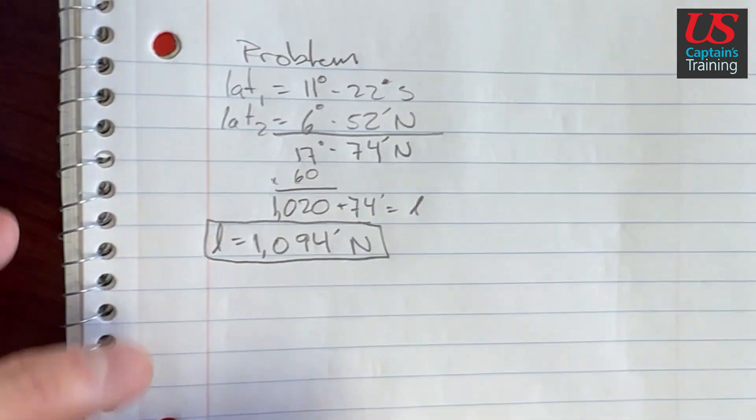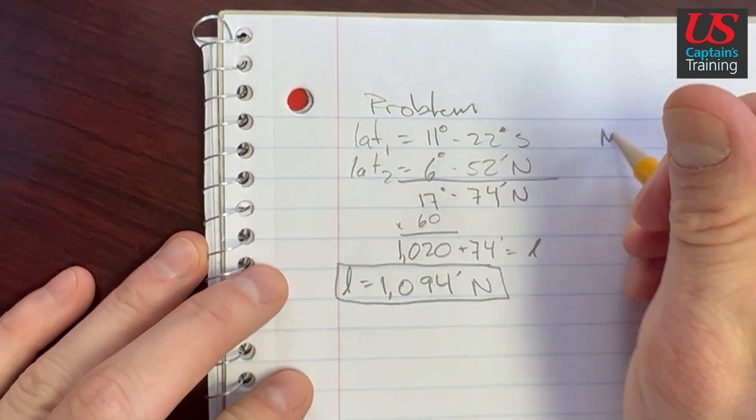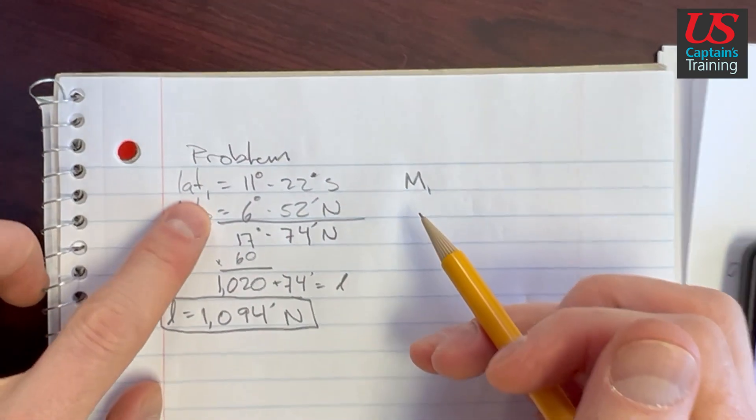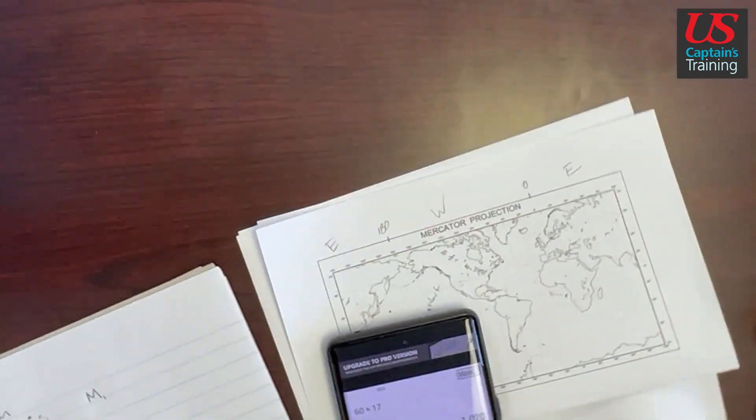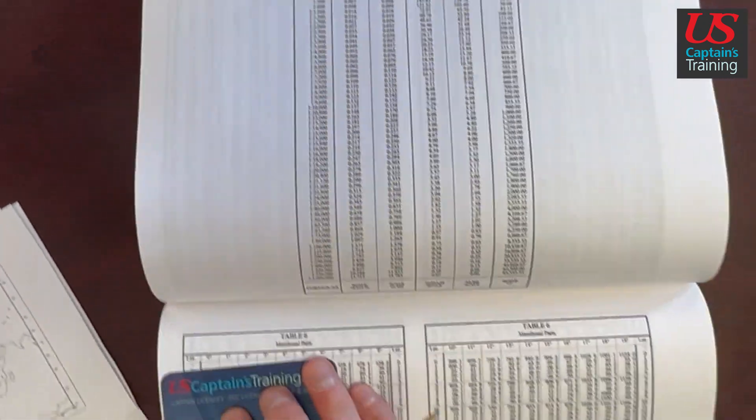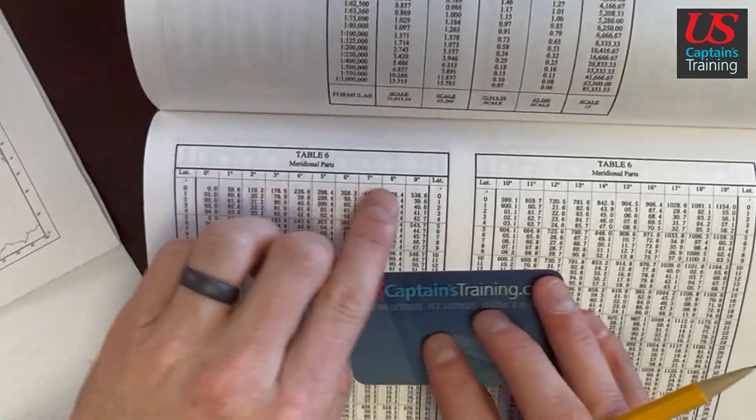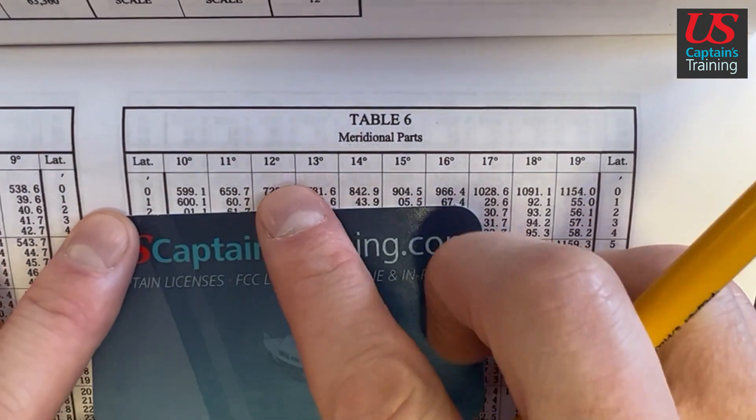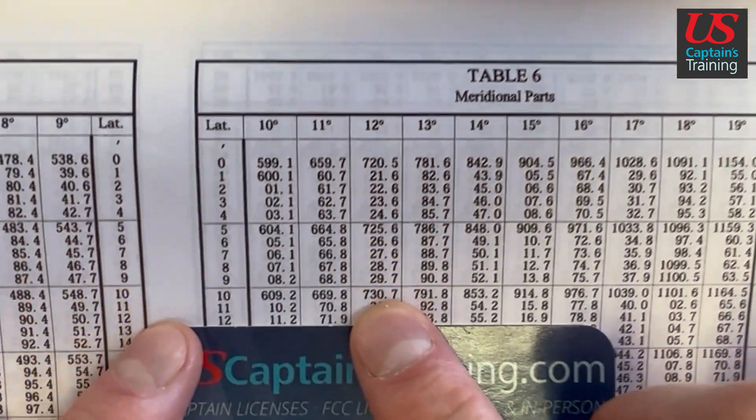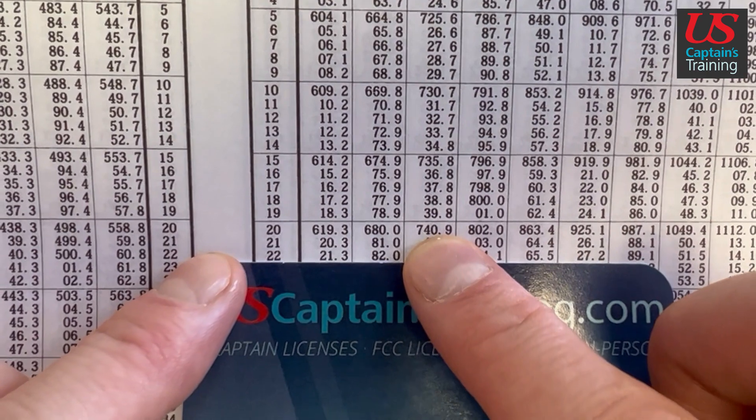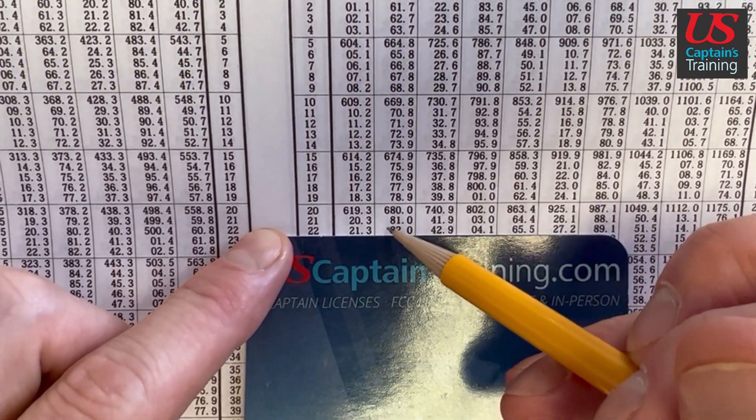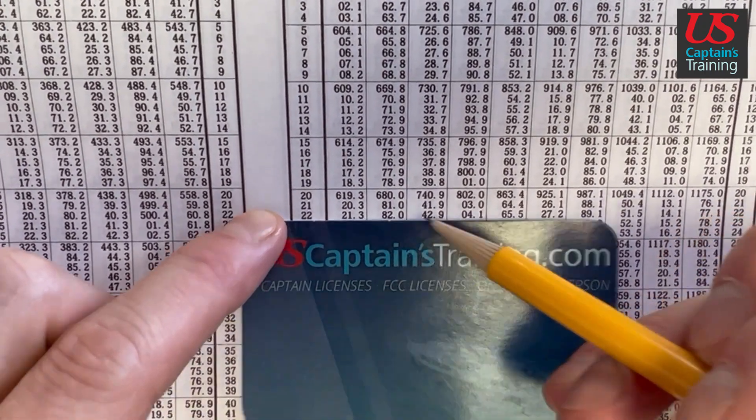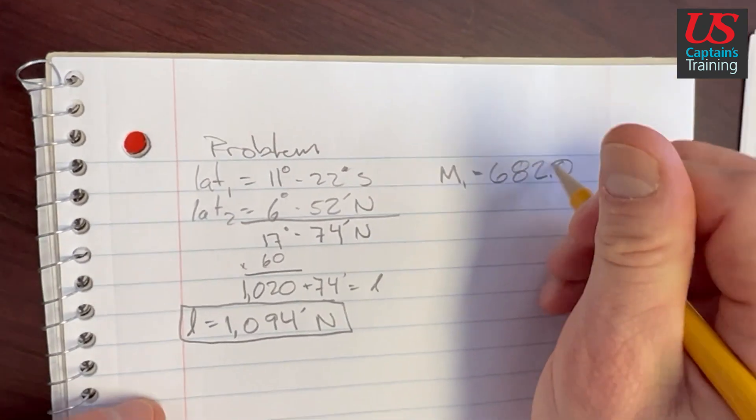Now we find meridional parts. We find m1, which is meridional parts of lat 1. So 11 degrees 22 minutes. So we come to the table of meridional parts in the passage. Degrees are on top, minutes are on the side. So here we have 11, we come down to 22. So 11 degrees 22 minutes, we got 6. Bring that down. So we have 682.0.